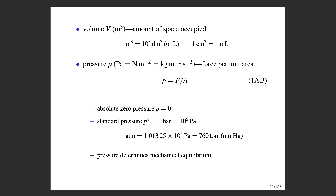Very frequently in thermochemistry we talk about standard states and standard conditions. The term standard pressure refers to a pressure of one bar, where one bar is 100,000 pascals — the Pascal is actually quite small. One bar is pretty close to one atmosphere, which equals 1.01325 times 10 to the fifth pascals.